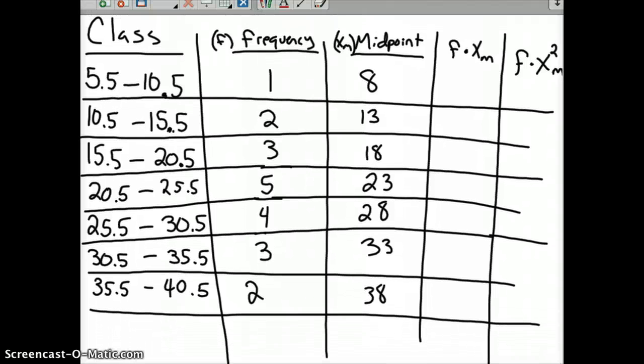So here's your data. Let's say you had a table, somebody went to all the work to give you a frequency distribution with the classes already done and the frequencies, and they found the midpoints by taking 5.5 plus 10.5 divided by 2. That gives you 8. So the first thing you do is you set up two more columns, and that's what I have here.